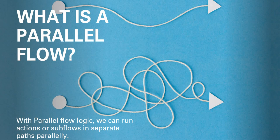So firstly, what is a parallel flow? With parallel flow logic we can run actions or subflows in a separate path parallelly. As the name suggests, we can run multiple actions or subflows separately and they don't interfere with each other. You can write as many actions or subflows as you want and they run in parallel.